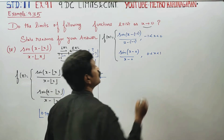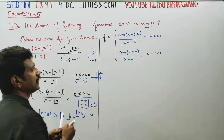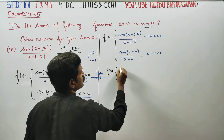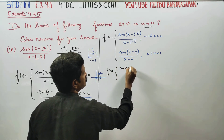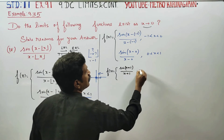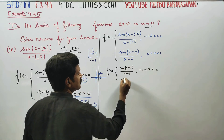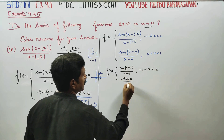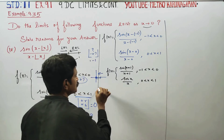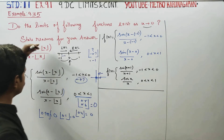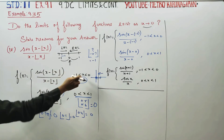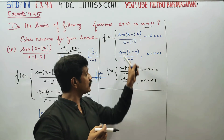In the interval 0 to x less than 1, f of x is equal to minus into minus plus 1, which gives sin(x+1) by (x+1). For minus 1 less than x less than 0, x minus 0 is equal to x, giving sin(x) by x. For 0 less than x less than 1, function is redefined using greatest integer functions.